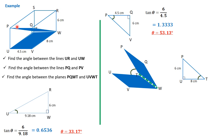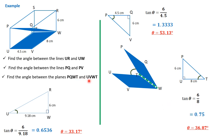Therefore, we say tan theta equals 6 over 8, which is 0.75. Tan inverse of that would be 36.87 degrees. Therefore, that answers the question. The angle between the planes P,Q,W,T and U,V,W,T is 36.87 degrees. I hope that is clear.